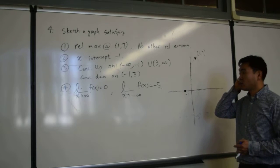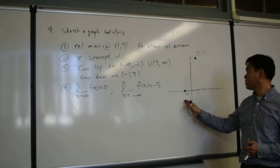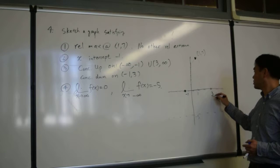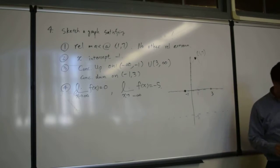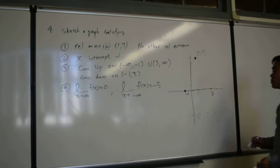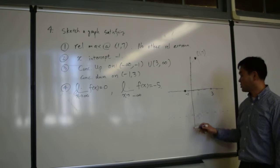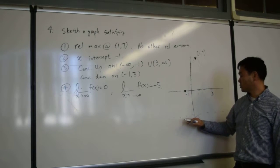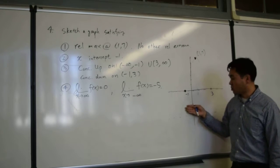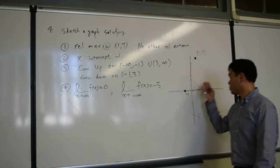It has to be concave up on negative infinity to negative 1, and 3 and afterwards. Let's think about the concavity later. First, try to come up with the graph that's going to pass through this point and that point, that has asymptote negative 5 as you go left, and as you go right, it should be getting closer and closer to 0.